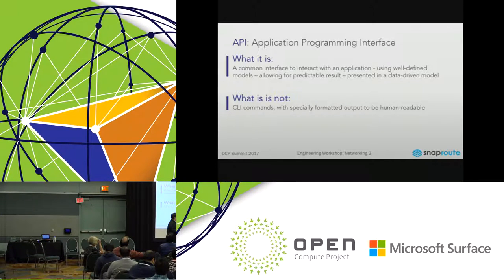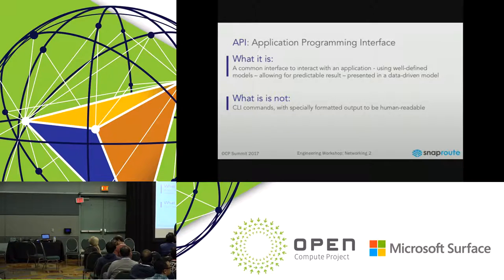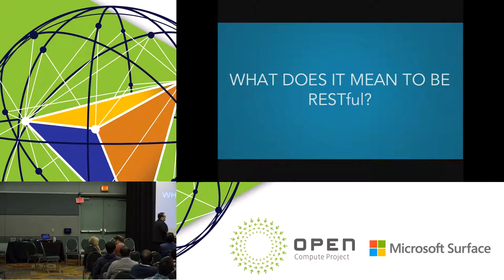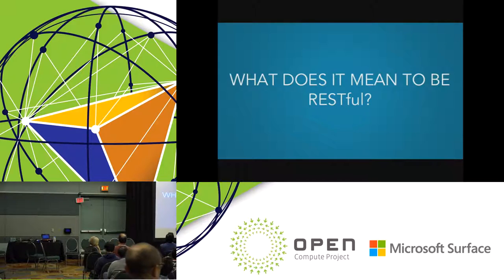I don't get everything in the world and then have to look through it — I ask for something, I get something back. It's not human-readable; it's not meant to be something you run and look at on the device. It's a programmatic model for getting information. In FlexSwitch, we've adopted a RESTful model.